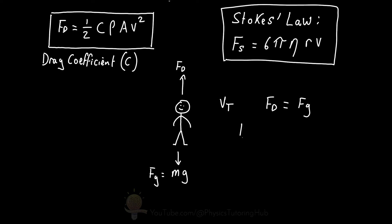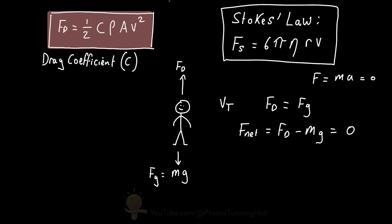At terminal velocity, the net force acting on the skydiver equals the drag force pointing upward minus the skydiver's weight, and that equals zero because the skydiver is no longer accelerating. According to Newton's Second Law, force equals mass times acceleration, and when acceleration is zero the net force equals zero. So if our drag force equals the skydiver's weight, we can plug in the drag force equation and set it equal to mg.